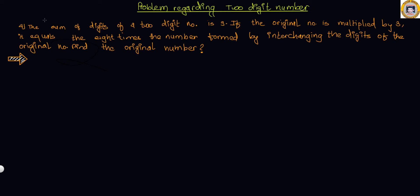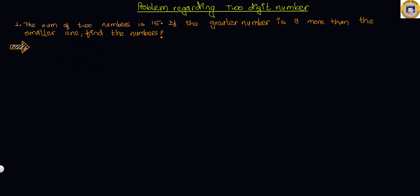Hi, it's me, Tutor Benoth. In this video we are going to talk about problems regarding two-digit numbers. It's one of the popular problems in high school mathematics. Let's begin. In this problem, the sum of two numbers is 15, and the greatest number is 9 more than the smaller one. Find the numbers.